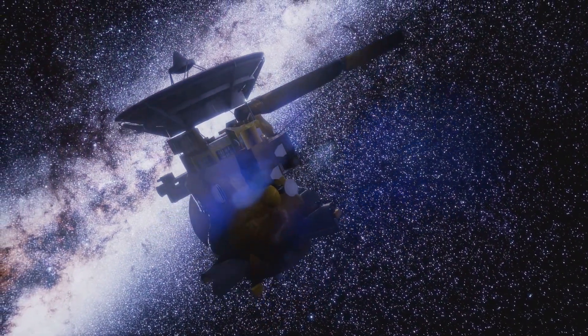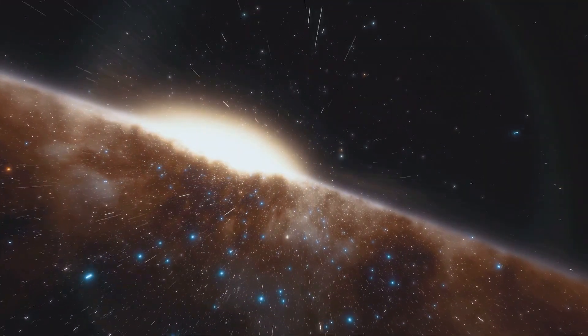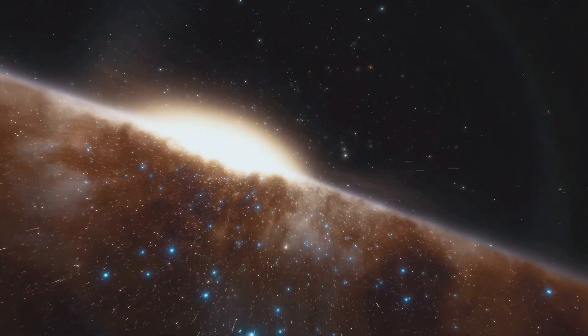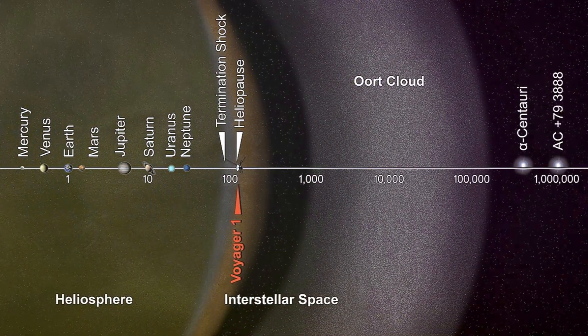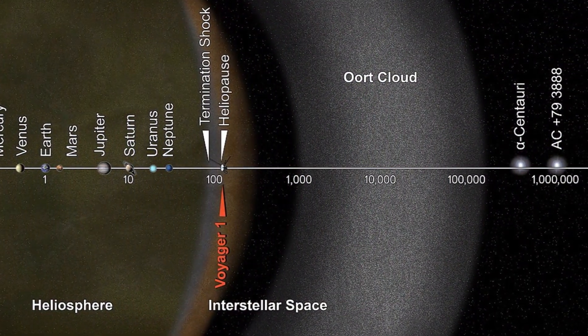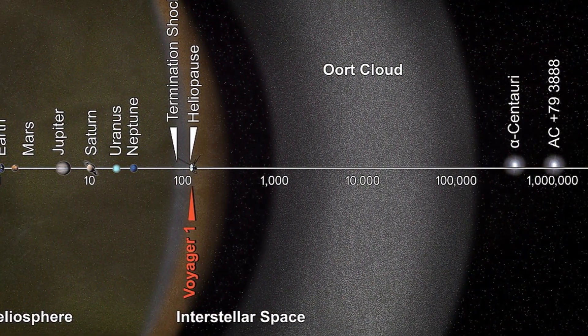Instead, we use light years, the distance light travels in a year, to describe these vast expanses. This unit helps us grasp the immense scale of the Oort Cloud's location. The inner edge of the Oort Cloud is estimated to begin at about 1,000 astronomical units from the sun, marking the start of this distant region.